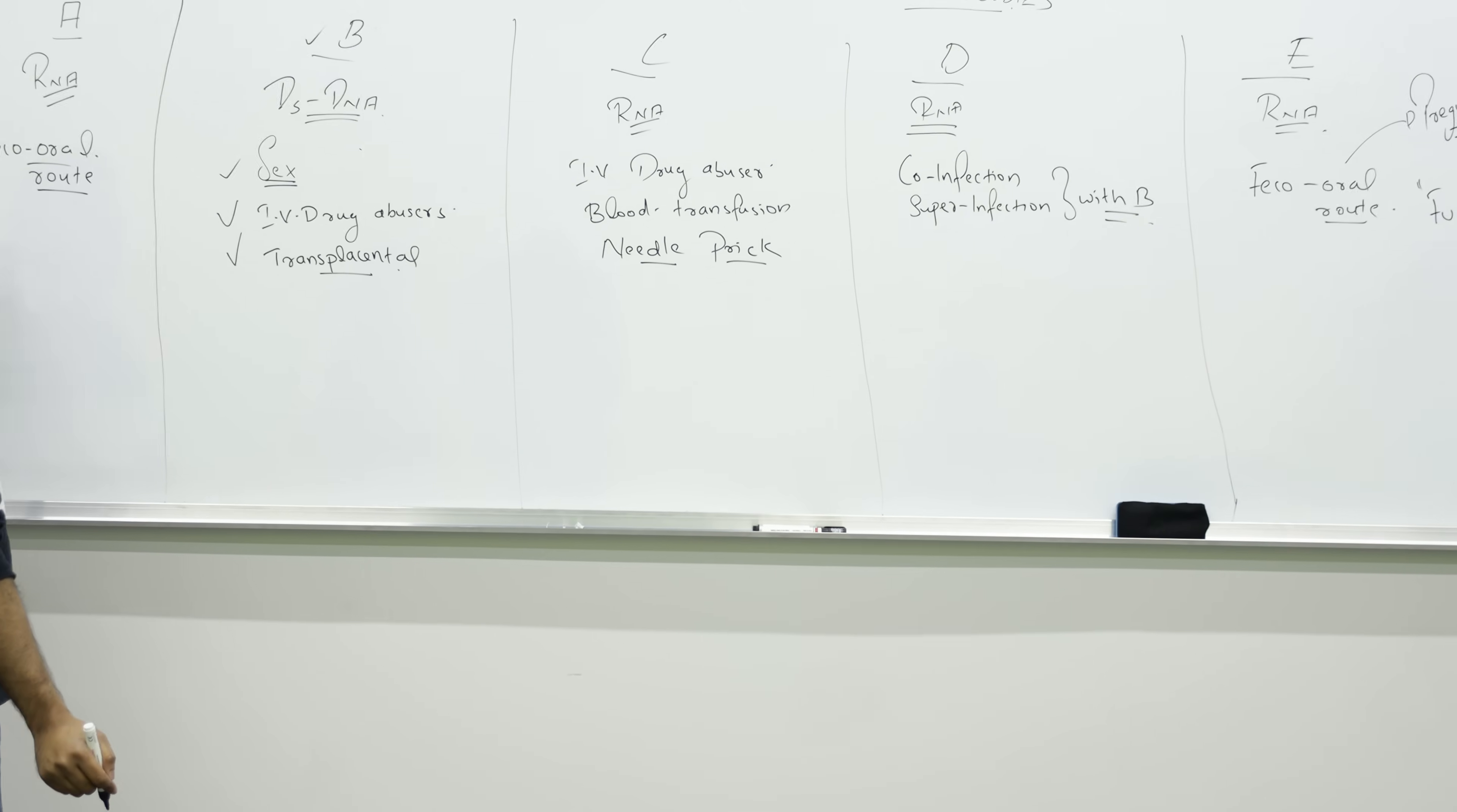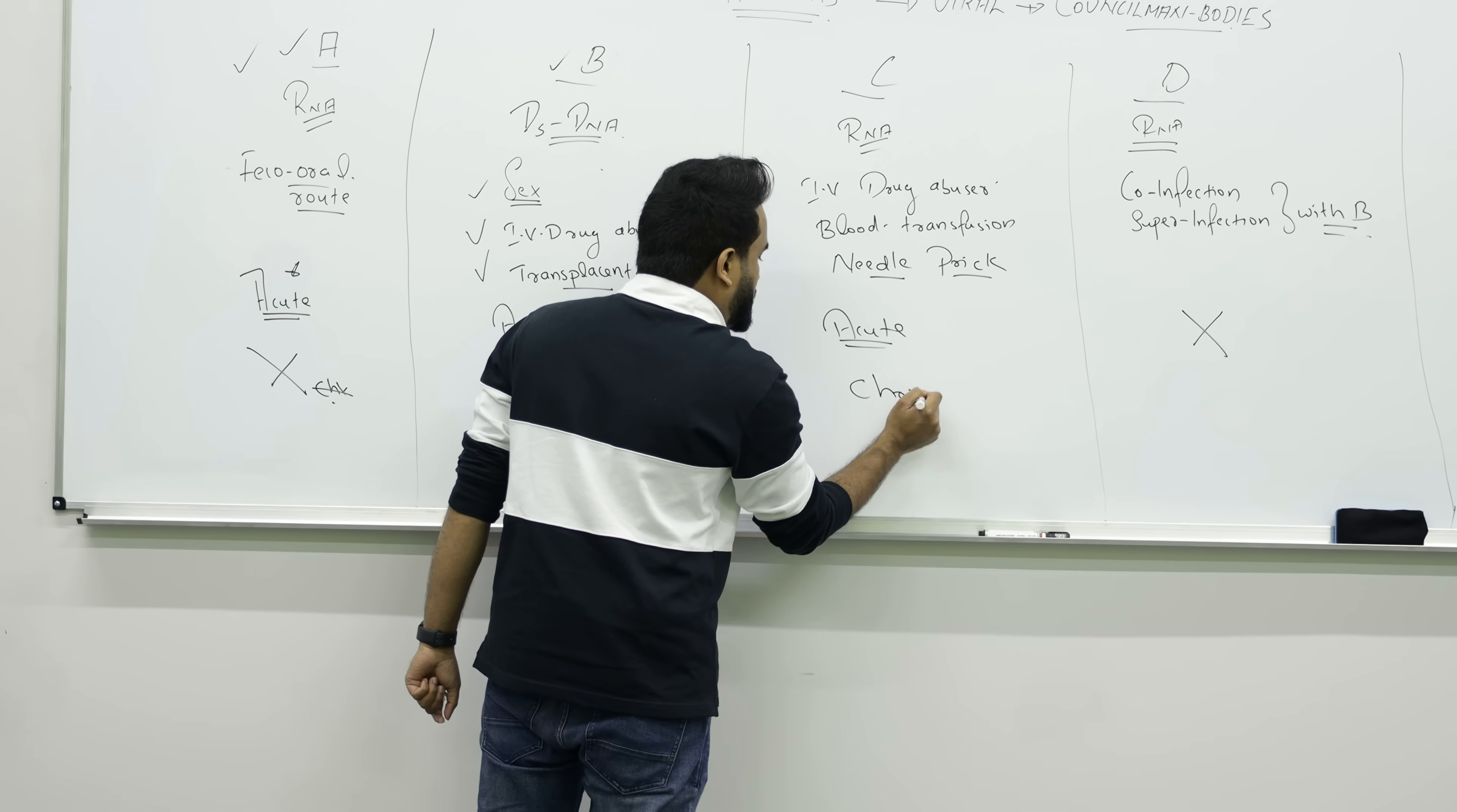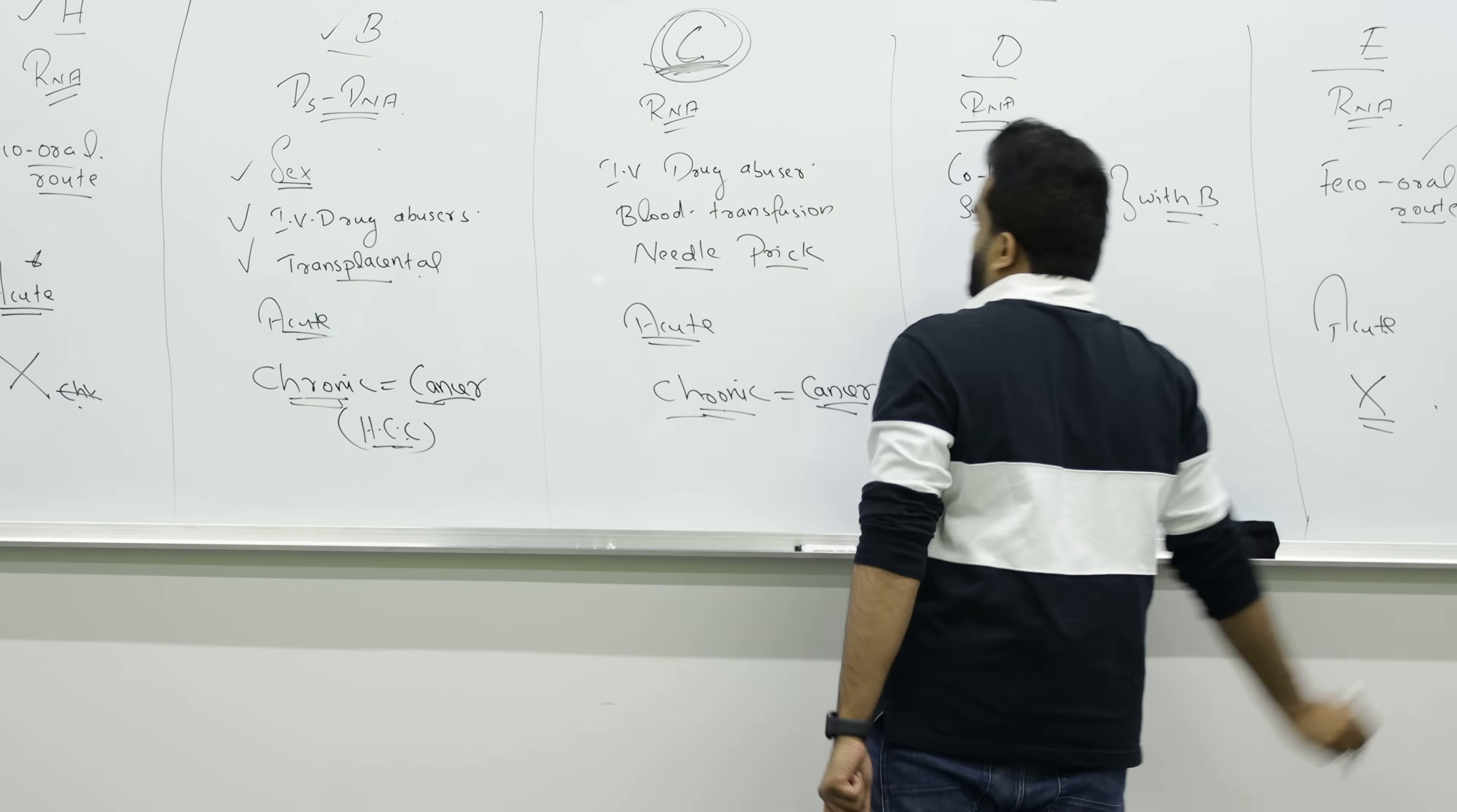A will cause acute infection. B can cause acute, C can cause acute, D can never cause acute, E also causes acute infection. But don't expect A to have chronic infection. Chronic is completely reserved for B and C. If I have inflammation of my liver for a long time, maybe I'm at high risk of hepatocellular carcinoma. Chronic equals cancer. Most common chronic hepatitis is C. D is always chronic with B. E also doesn't have chronic infection.